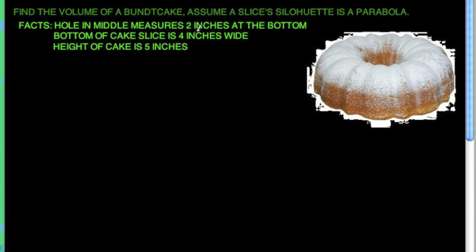The facts are that the hole in the middle of the bundt cake measures two inches at the bottom. The bottom of the cake slice is four inches wide and the height of the cake is five inches. So let's take these pieces of information and see what it means.